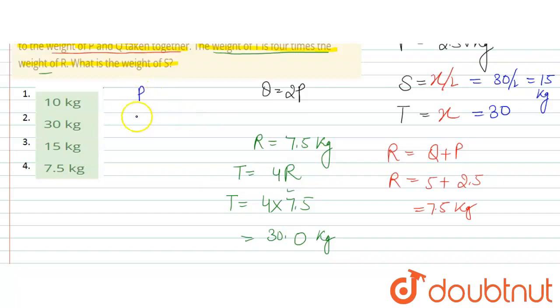So यहाँ पर आपके पास P, Q, R, S, T. T का weight हो गया 30 kg. S का weight हो गया 15 kg. R का weight हो गया 7.5 kg. And Q का weight हो गया 5 kg. And P का हो गया 2.5. हम से पूछा जा रहा है weight of S. So S का weight हो 15 kg. जो की आपका option number 3 है.